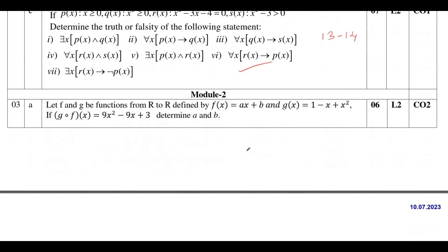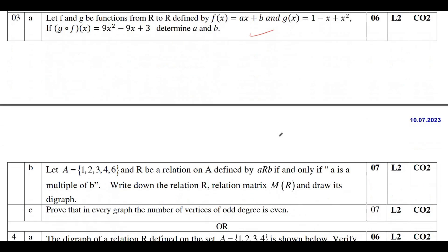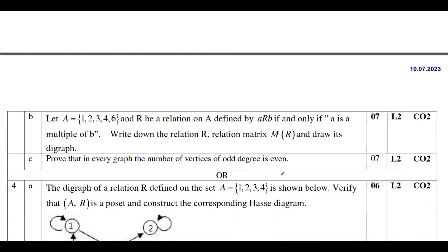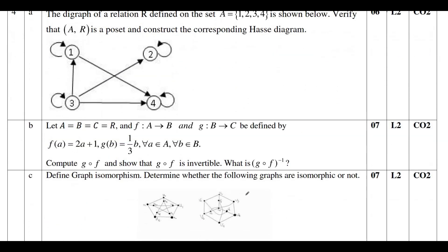Moving to Module 2 — it covers relations, functions, and graph theory. Under functions, one problem will definitely be from composition. Then study digraph and matrix relation, then Hasse diagram under poset, then invertible function, and finally isomorphism from graph theory.